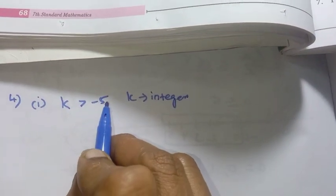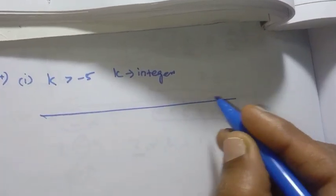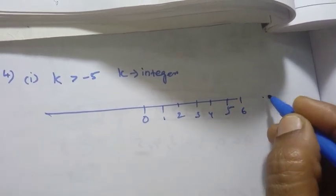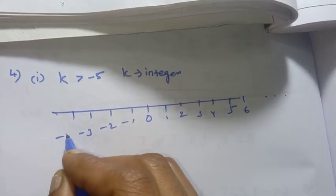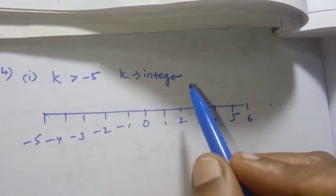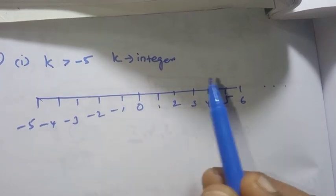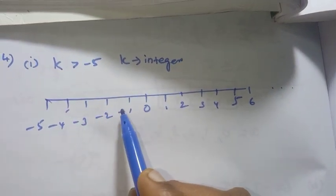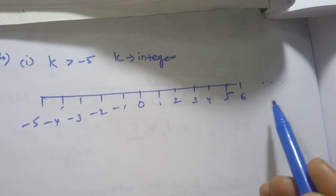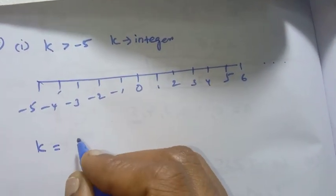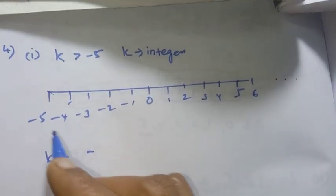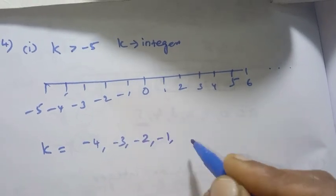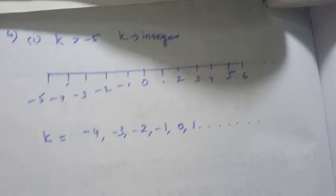k is greater than minus 5. If you look at the number line: 0, 1, 2, 3, 4, 5, 6 on the positive side and minus 1, minus 2, minus 3, minus 4, minus 5 on the negative side. Since k is greater than minus 5, that means minus 5 is not included, and the values go: minus 4, minus 3, minus 2, minus 1, 0, 1 and onwards. This is the answer for the first one.